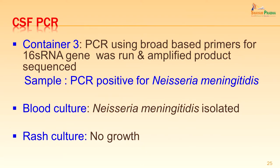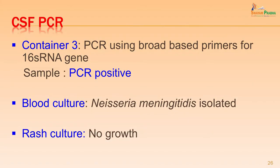The container kept for PCR had a broad-based primer run with the 16S rRNA gene; the amplified product was sequenced and matched with the database available online. The sample was PCR positive for Neisseria meningitidis. Blood culture also showed growth of Neisseria meningitidis. From the rash culture no growth was obtained in this patient, though occasionally Neisseria can be isolated even from the rash. The final laboratory report was Neisseria meningitidis isolated, sensitive to ceftriaxone, cefotaxime, ciprofloxacin, chloramphenicol and rifampicin.